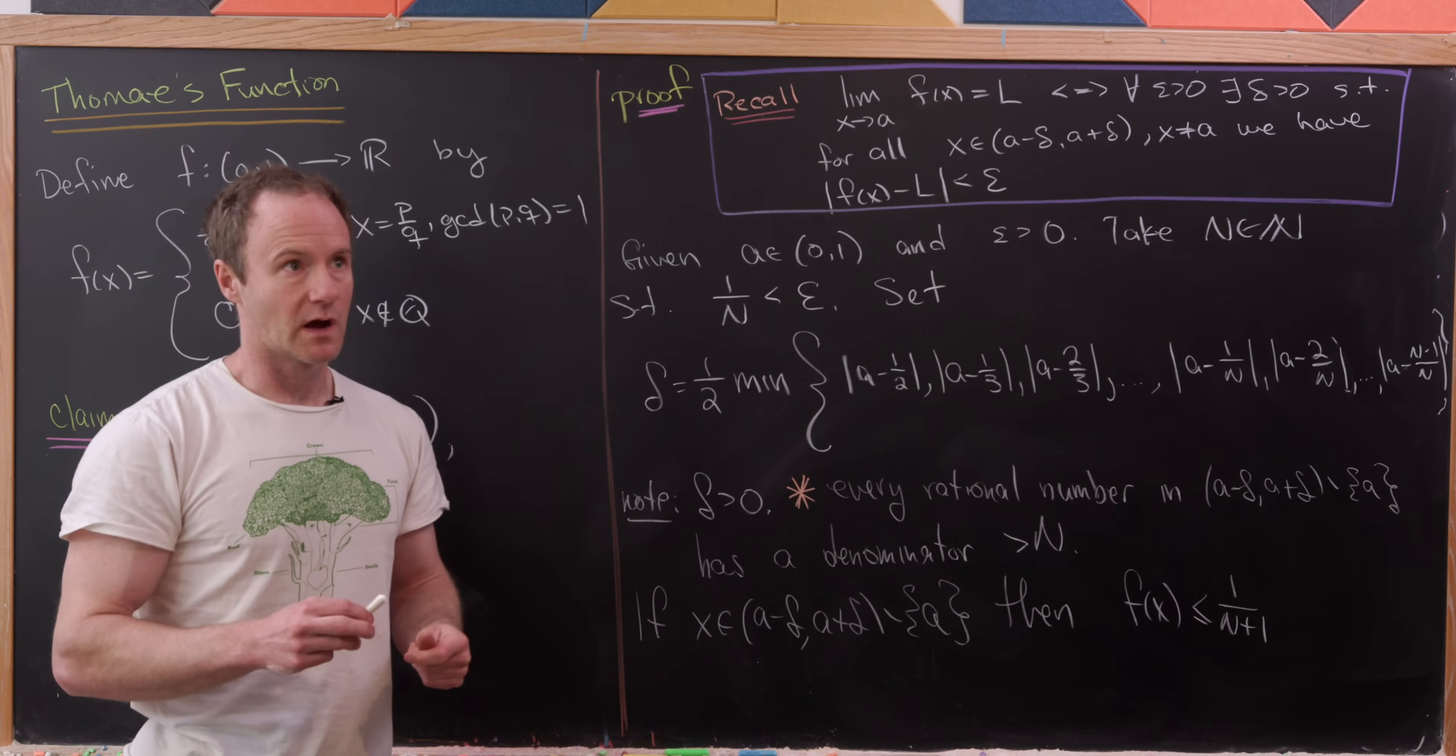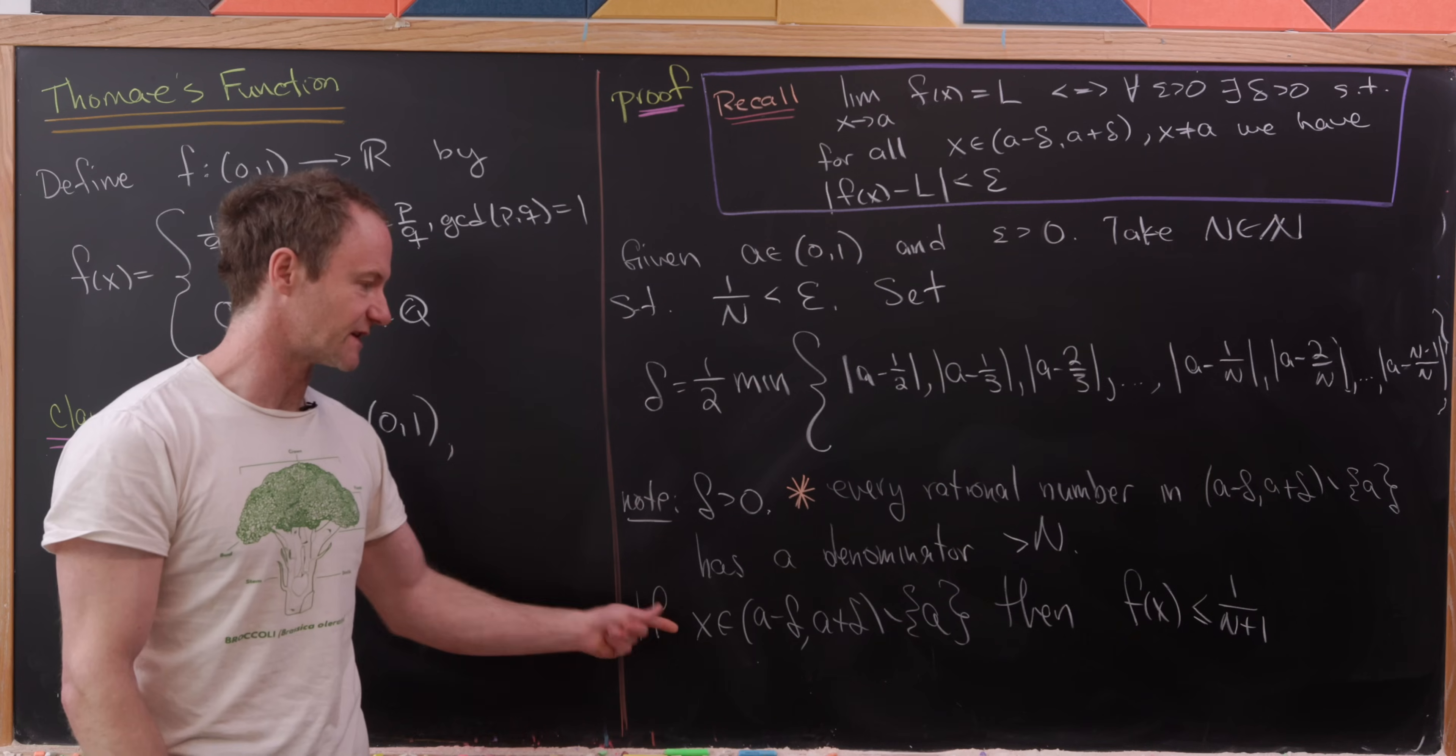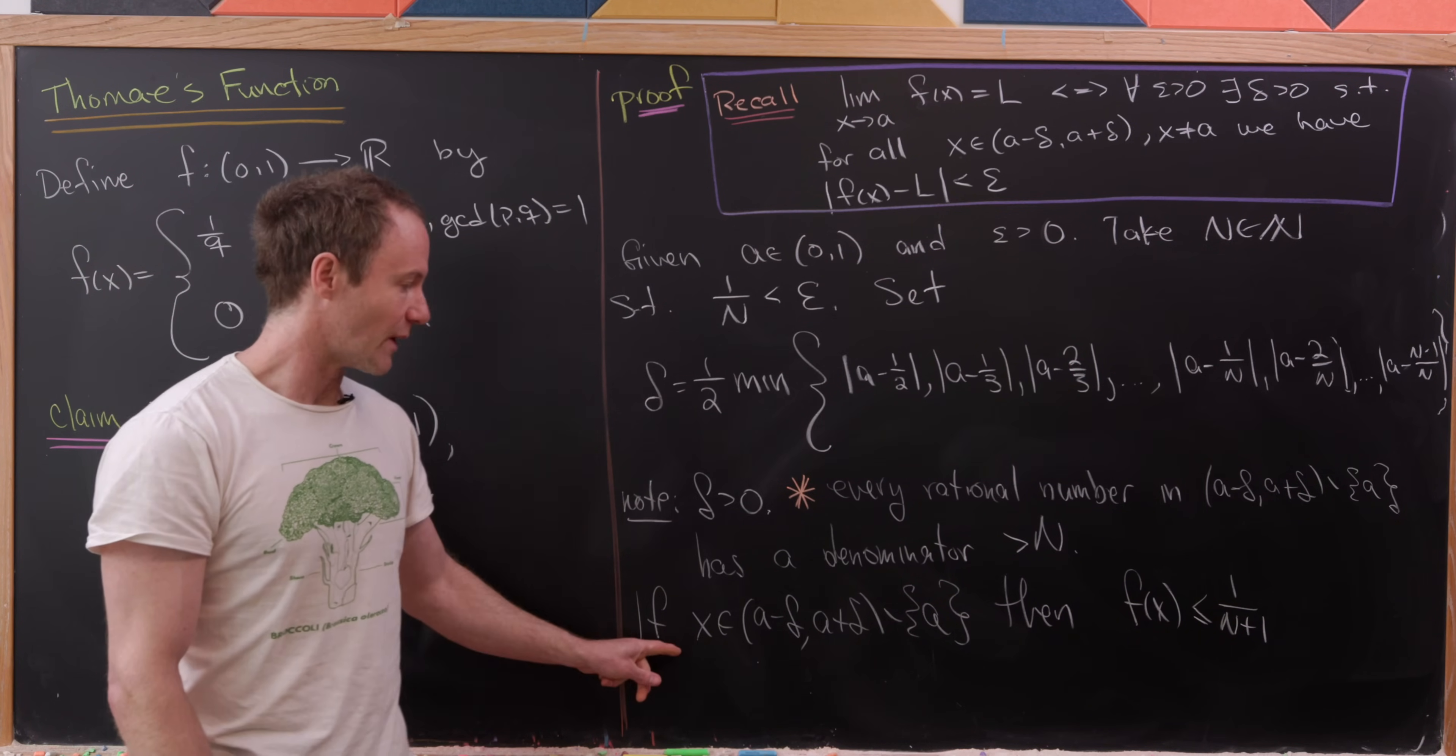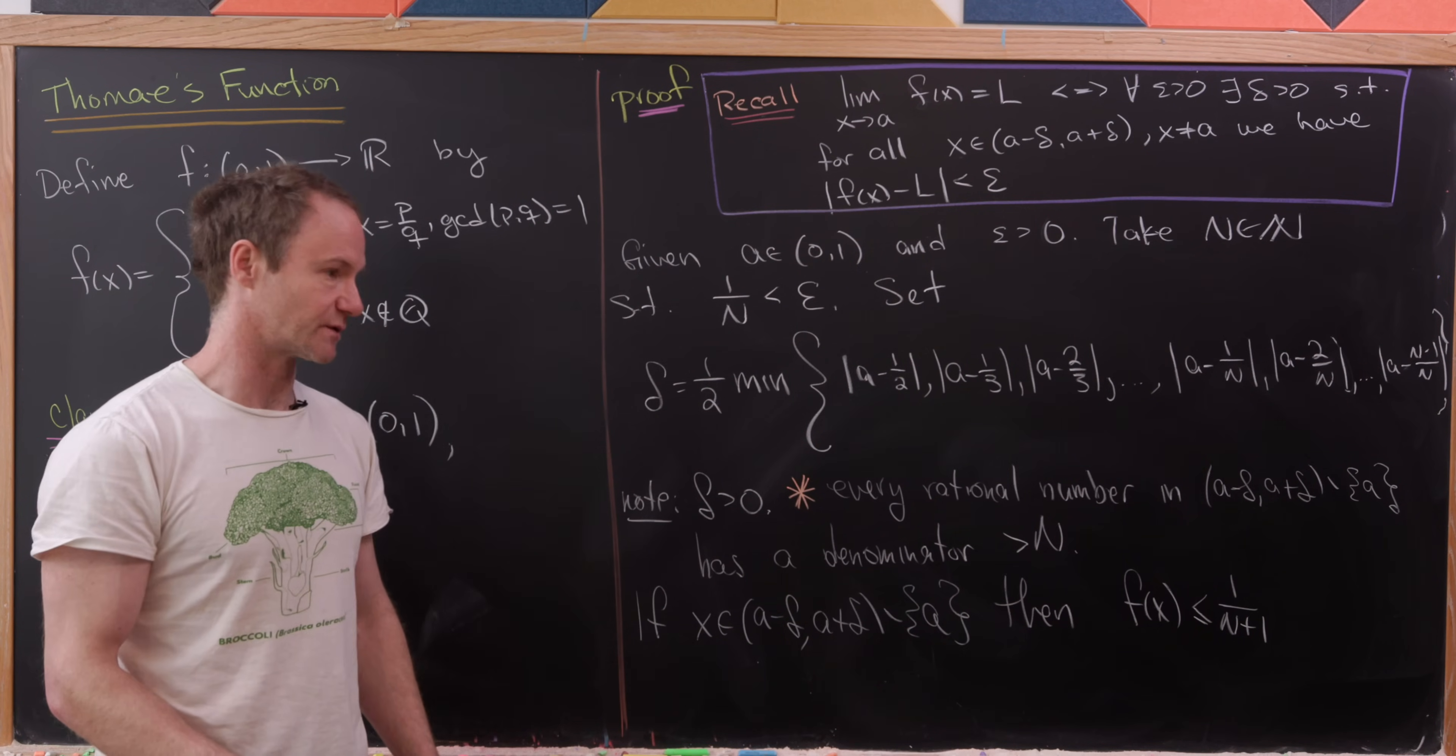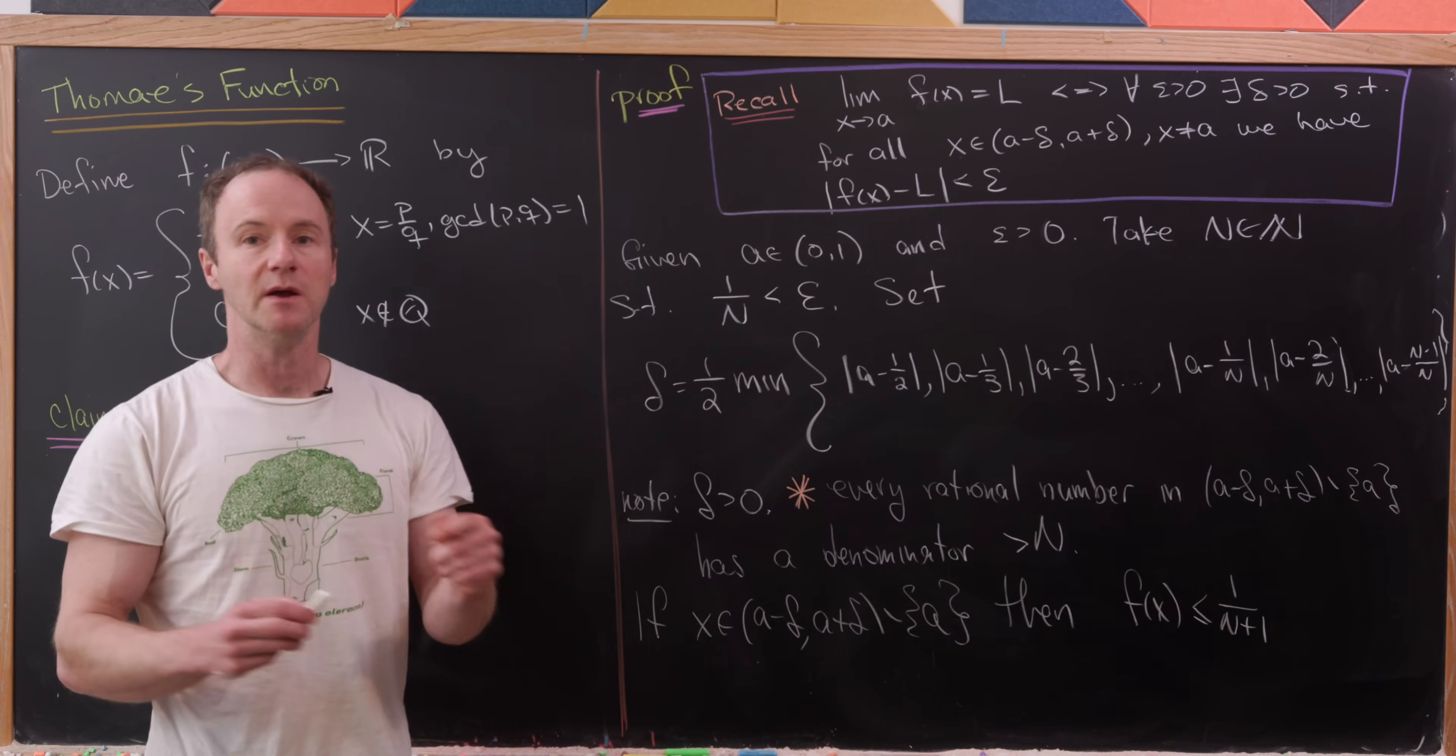And furthermore, I would say most of the time, F of X is equal to 0 because most of the time, X will be an irrational number. So at worst, it's rational and that value is equal to 1 over N plus 1. And at best, it's irrational and it's already equal to 0.